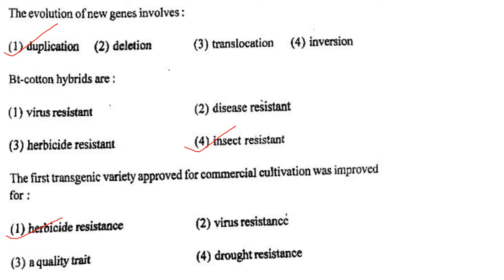Next one: BT cotton hybrids are option 1, virus resistant; option 2, disease resistant; option 3, herbicide resistant; option 4, insect resistant. Answer is option 4: insect resistant.